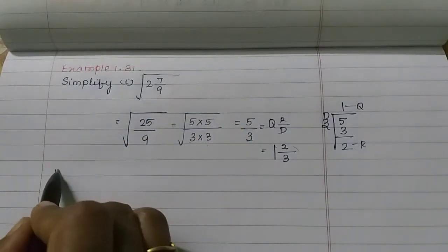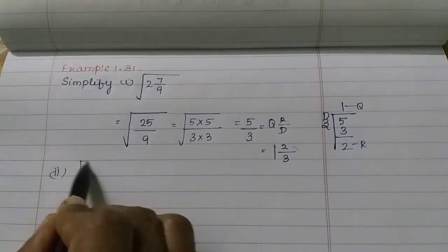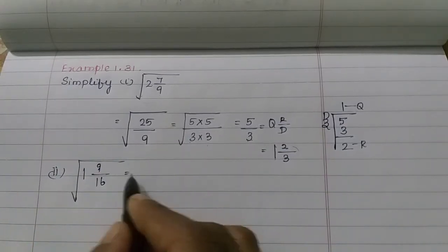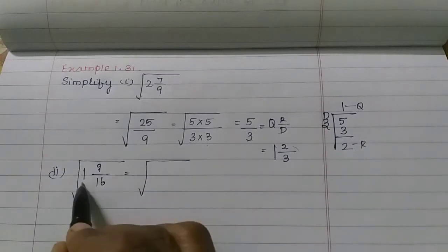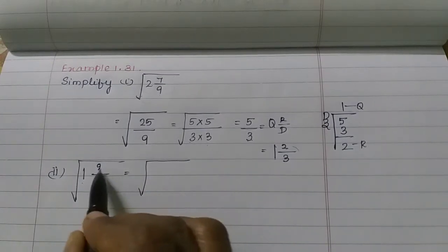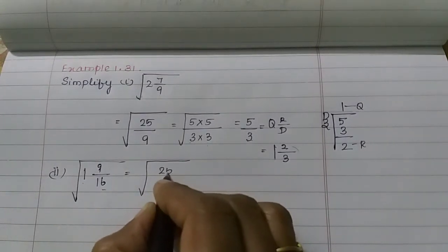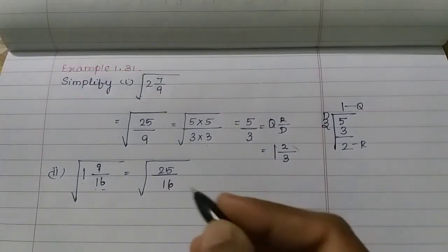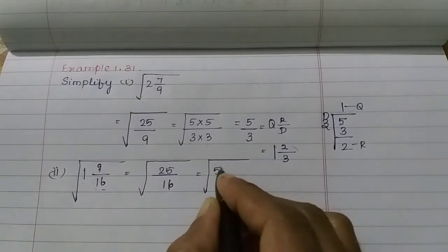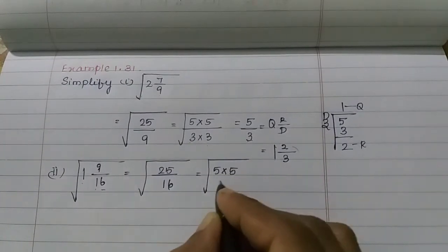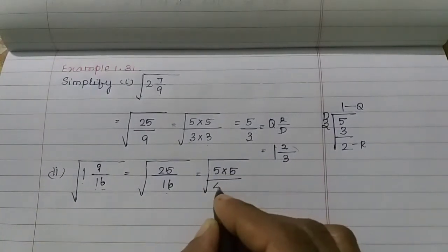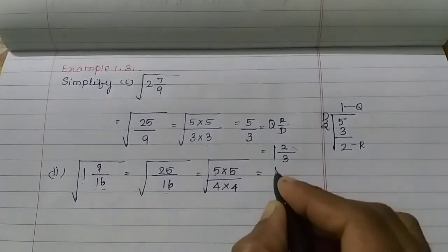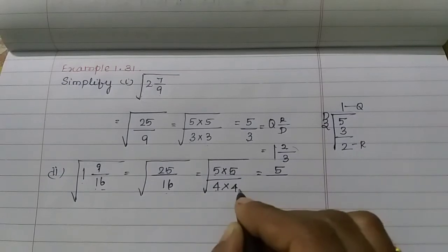The second subdivision: root of 1 and 9/16. This is a mixed fraction. First convert to improper: 1 times 16 is 16, 16 plus 9 is 25. So we have 25 by 16. Now 25 is 5 times 5, and 16 is 4 times 4.